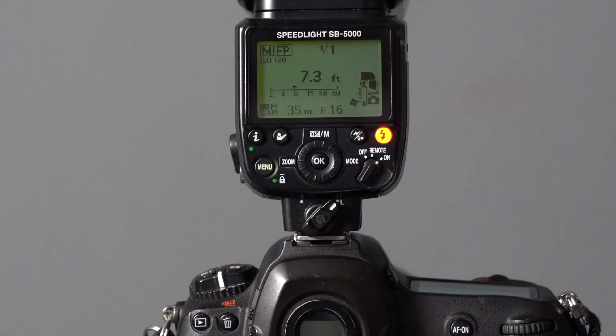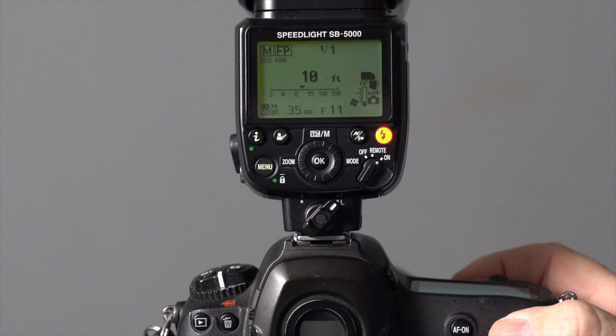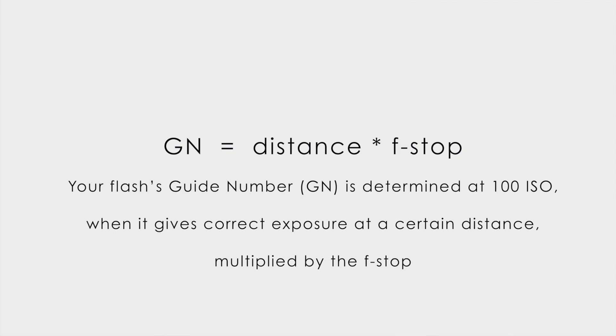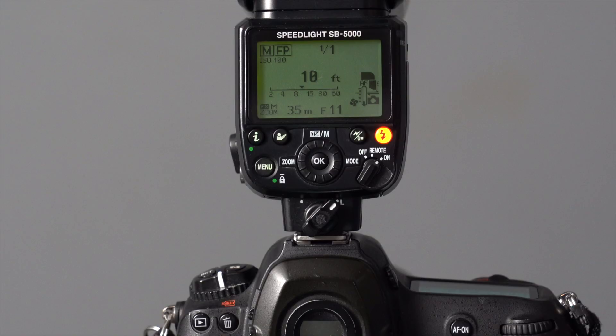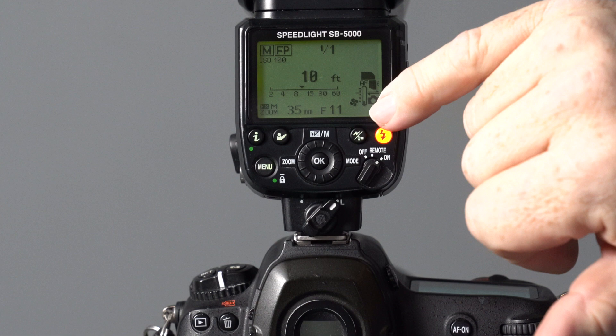Let's go to 1/250th at f/11 — we get 10 feet. Of course we get 10 feet, because the guide number is roughly 110: 10 times f/11 is 110. The guide number is PAID — power is given to you as the guide number, there's your aperture, there's your distance, and your ISO is 100 ISO. It all links together.